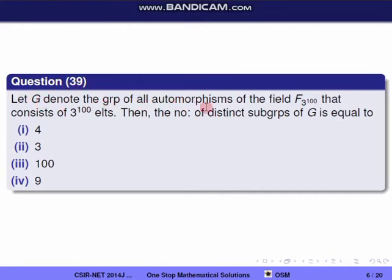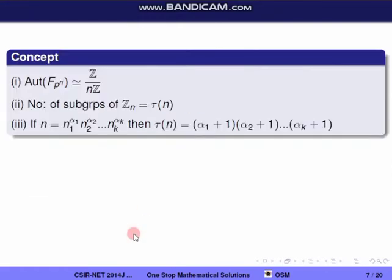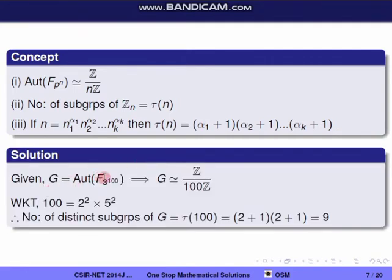Question 39: let G denote the group of all automorphisms of the field F_{3^{100}}, which has 3^{100} elements. Find the number of distinct subgroups of G. The automorphism group of F_{p^n} is isomorphic to Z/nZ, and the number of subgroups of Z_n is τ(n) — the number of divisors of n. If n = p1^{α1} · p2^{α2} · … · pk^{αk}, then τ(n) = (α1+1)(α2+1)…(αk+1).